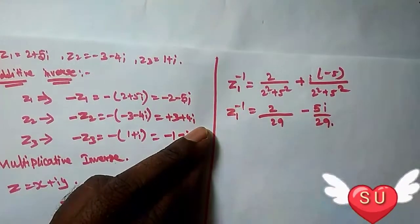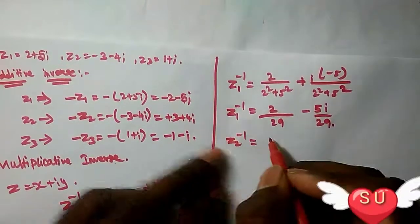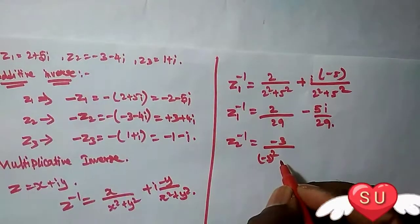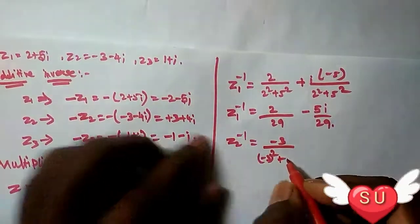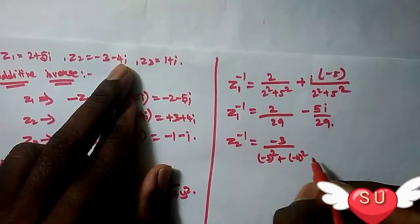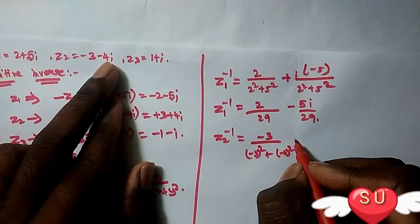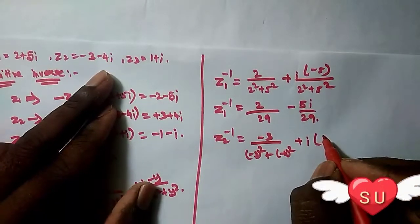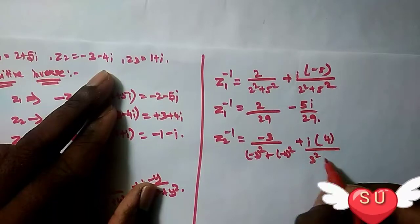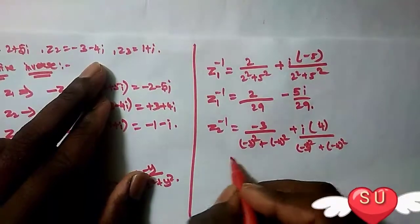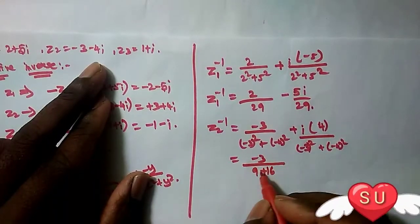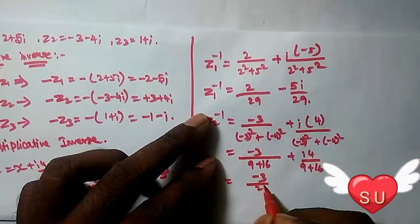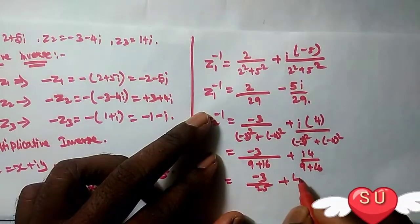Next is z₂ inverse. z₂ is -3 divided by ((-3)² + (-4)²) plus i times (minus the minus 4, which is plus 4) divided by ((-3)² + (-4)²). So -3 divided by (9 + 16), which is -3/25, plus 4i divided by 25. The answer is -3/25 + 4i/25.